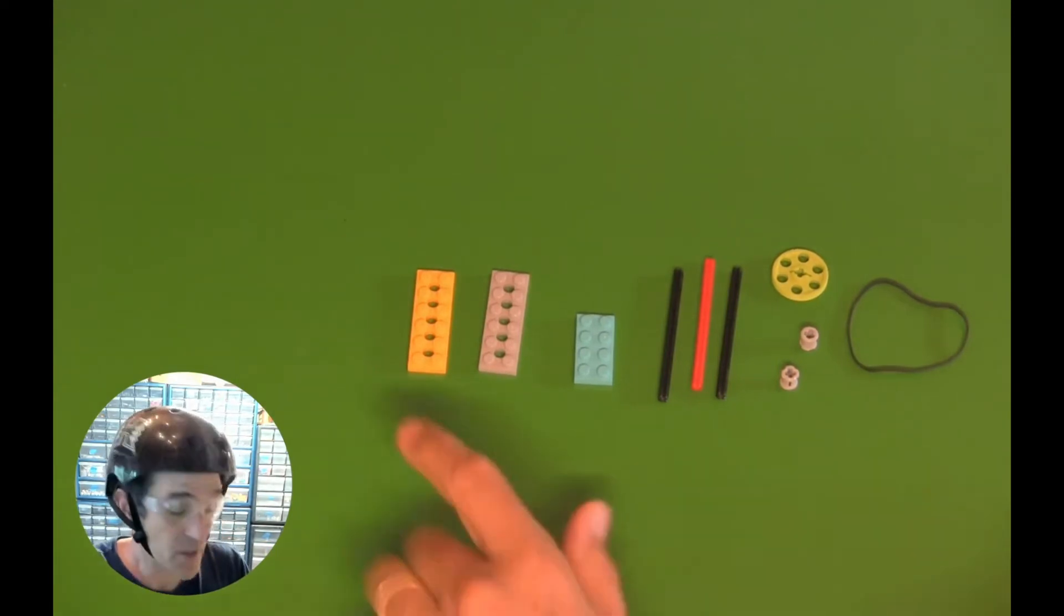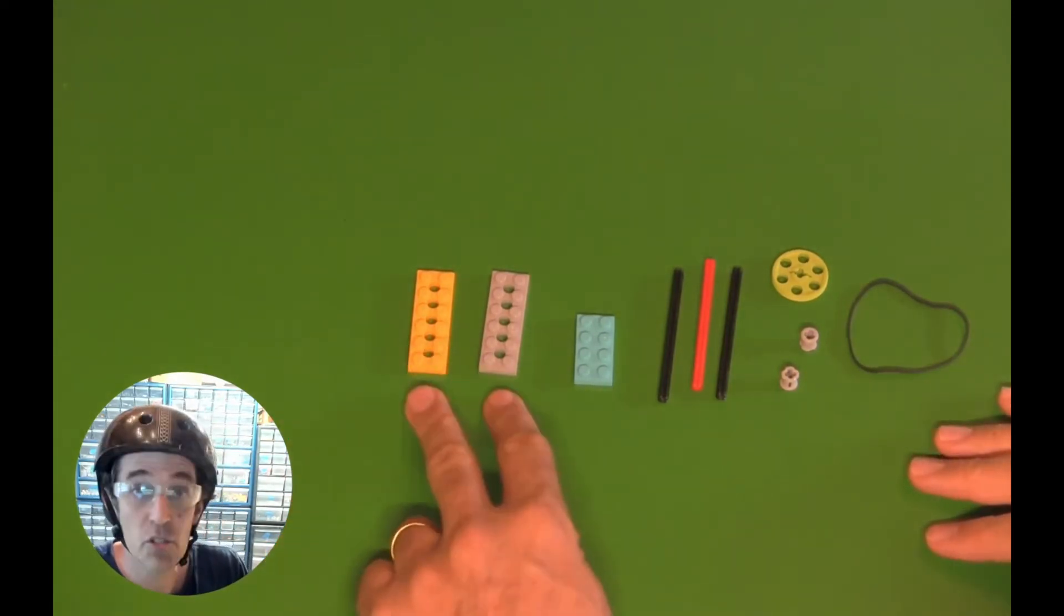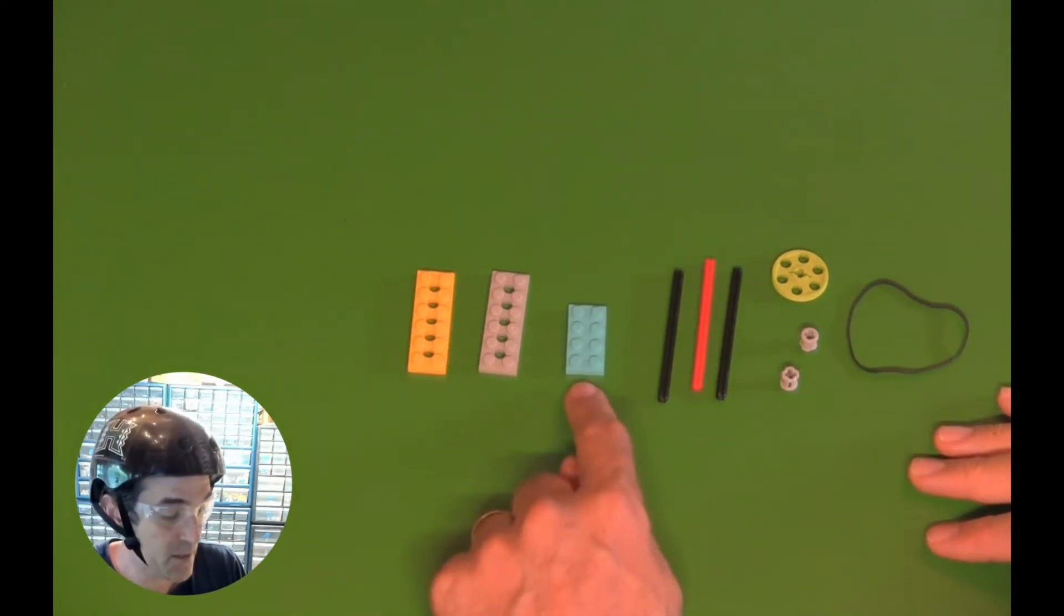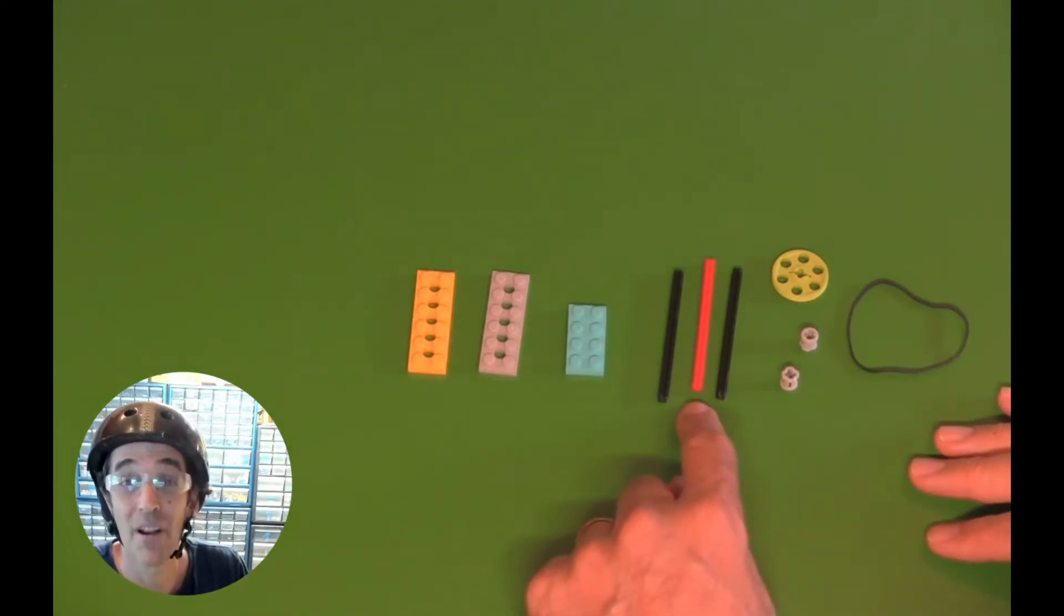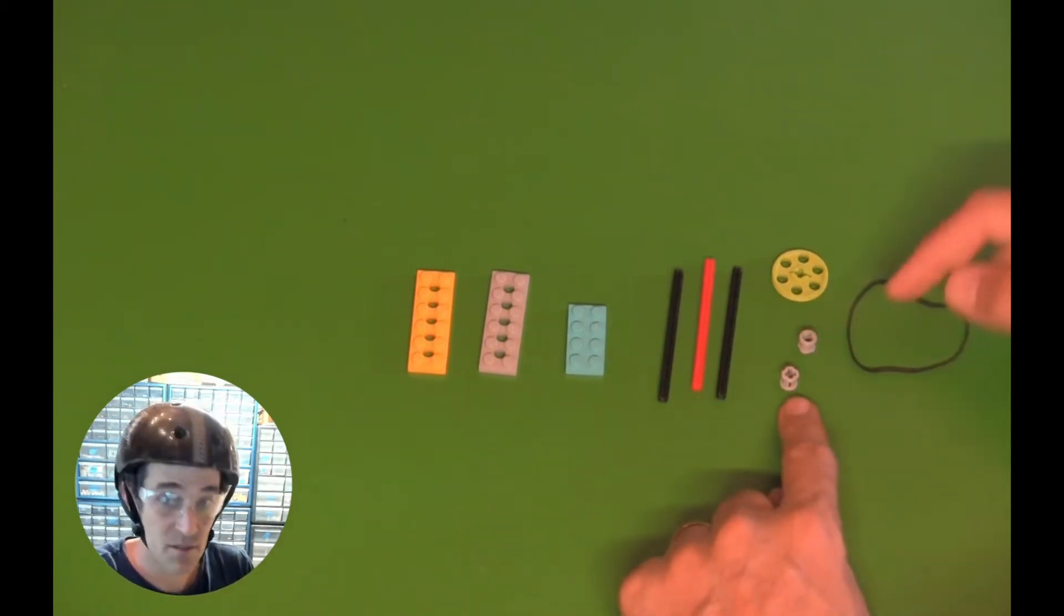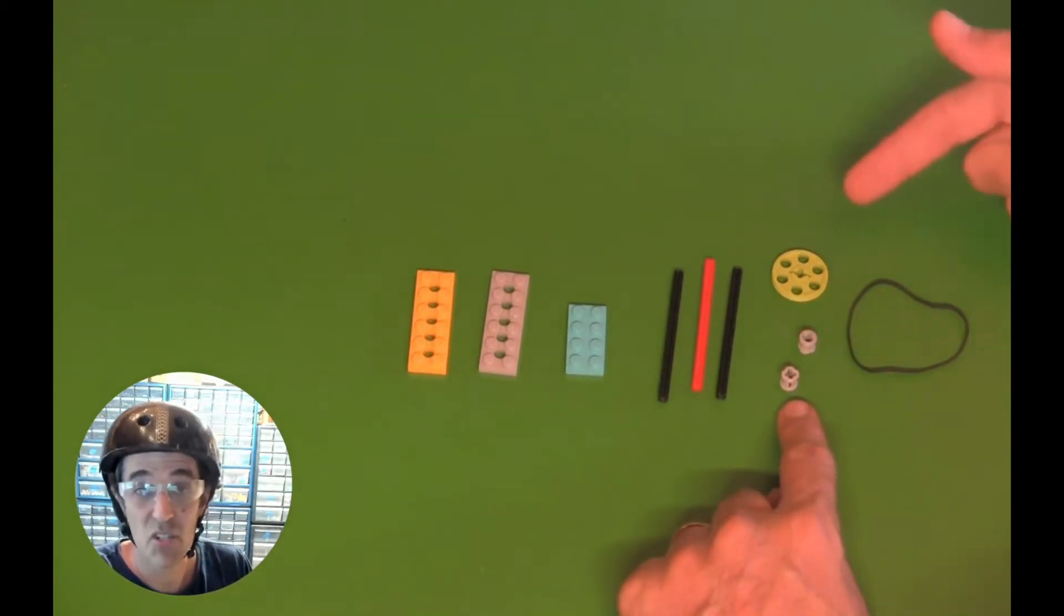Alright, we're ready to build. So here are our 10 pieces we need. We've got two 2x6 plates that have holes in them, one 2x4 plate, three axles that are number 8 axles so they're as long as 8 studs. I've got two bushings, a wheel, just a pulley wheel here.